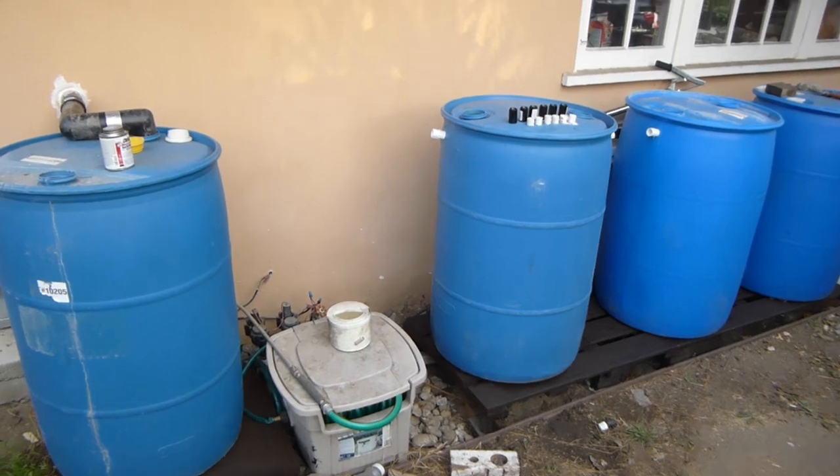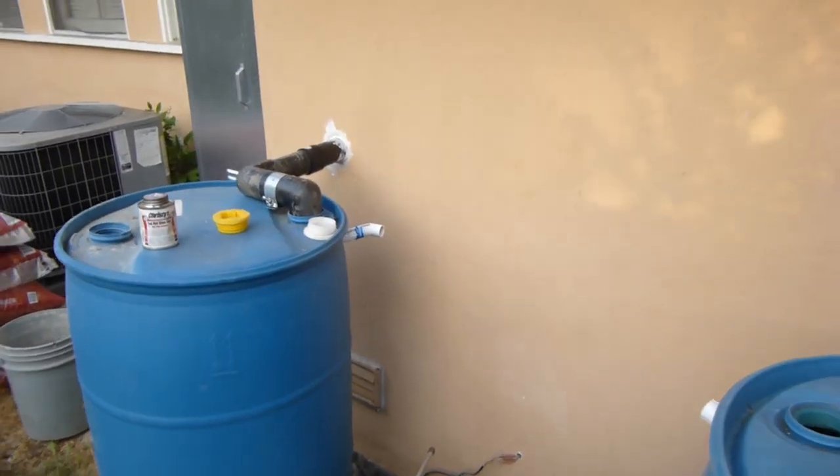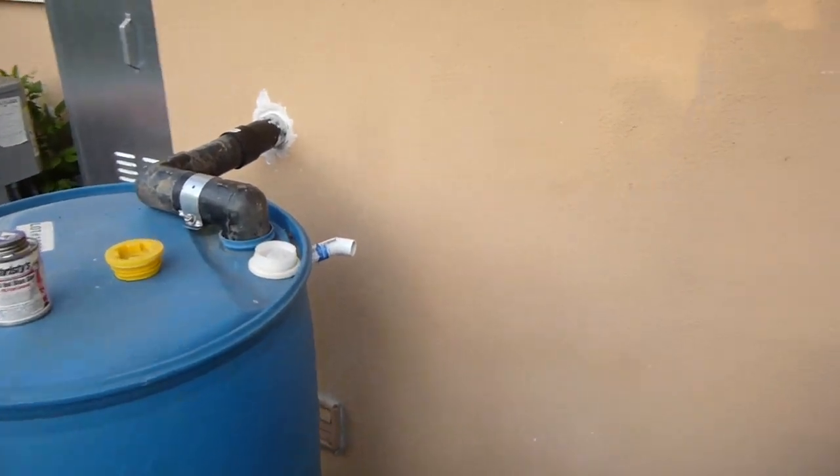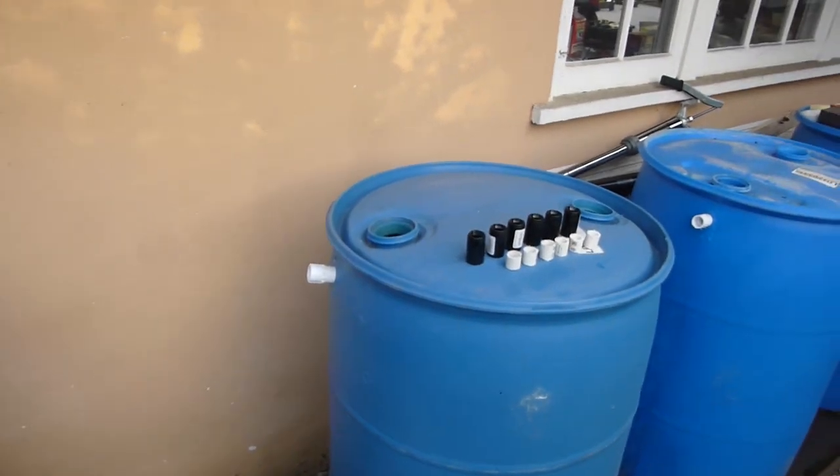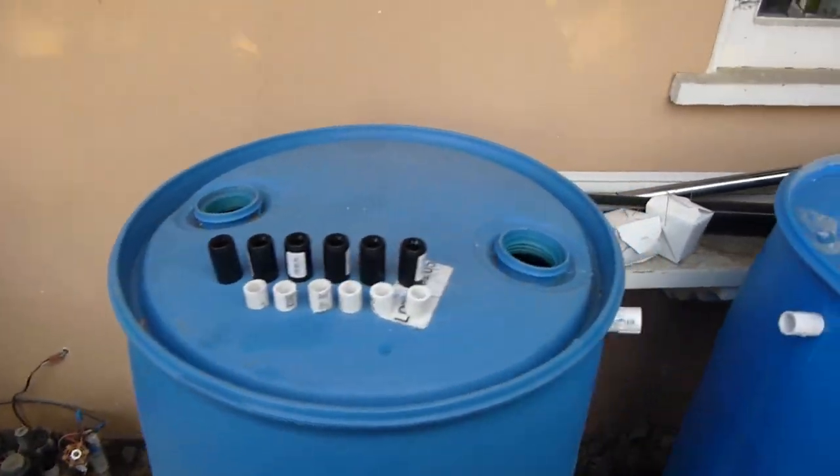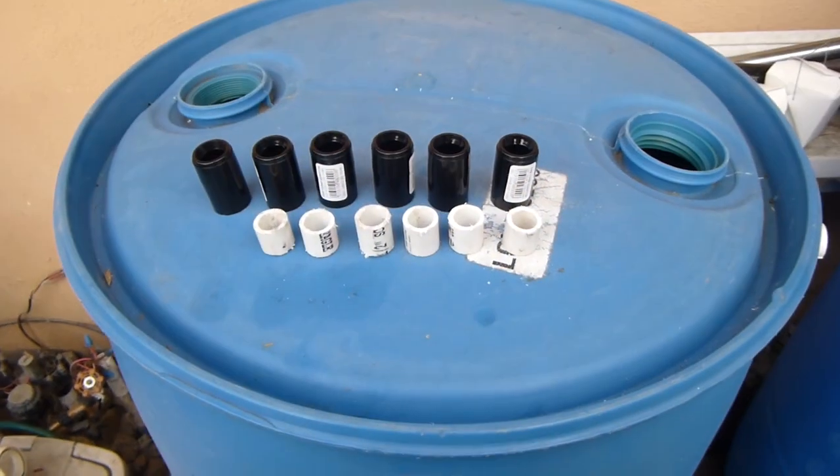OK, all my four rain barrels have been modified to have the PVC outlet. Right now, the first one has only one outlet, the second one has one inlet and one outlet, and the last one has one inlet only.